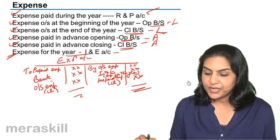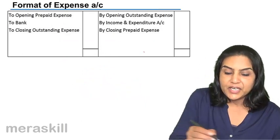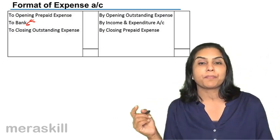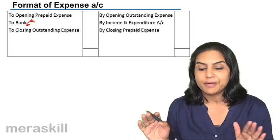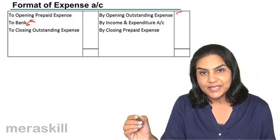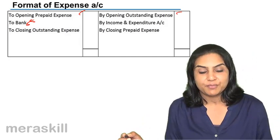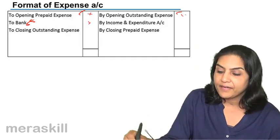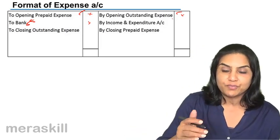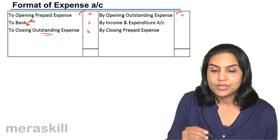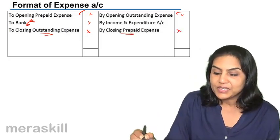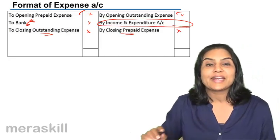Let's look at a neater presentation. Expense account debit to bank for what is actually paid. For opening balances: opening outstanding expense is a liability — transfer that liability to this revenue account by debiting that account and crediting opening outstanding expense. Prepaid is similarly an asset — credit the asset account, debit prepaid expense. Then close it: if there is any expense not paid, debit expense and create a liability account. If you've prepaid, create an asset and remove it from expense — prepaid account debit to expense. The balancing figure will be what goes to the income and expenditure account.